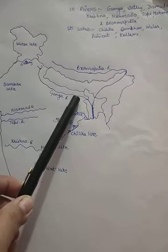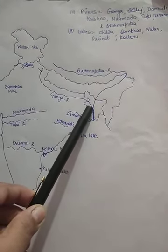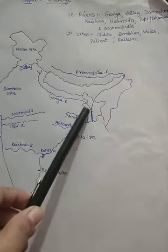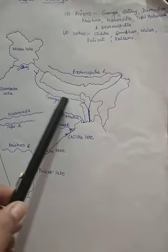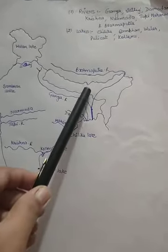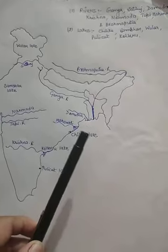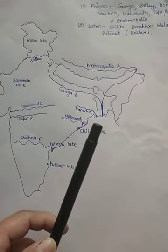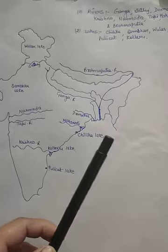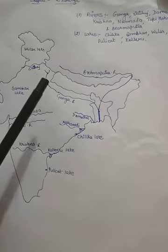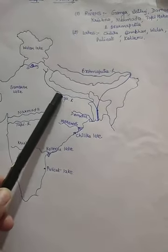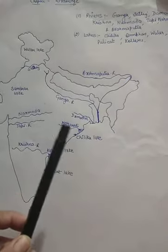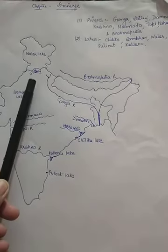Then it flows through Bihar and into Bangladesh, where it meets the Brahmaputra. Together, Ganga and Brahmaputra form the world's largest delta, which is known as the Sundarbans delta. So you will see here how the Ganga river flows. Next is the Satluj river.